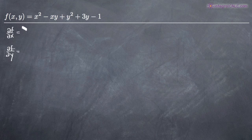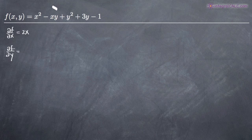When we take the partial derivative with respect to x, we're treating x as the variable and holding y as a constant. We'll take the derivative term by term. The derivative of x² with respect to x is just 2x. For negative xy, x is the variable so its derivative is 1, and y remains as a coefficient, so negative xy becomes negative y. Then y², 3y, and negative 1 all become zero because there's no x variable involved. So the partial derivative with respect to x is just 2x - y.